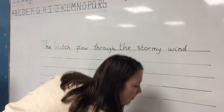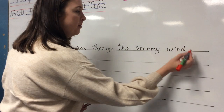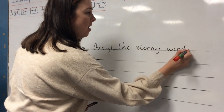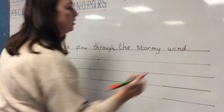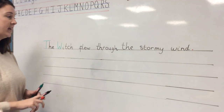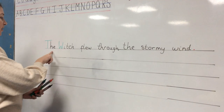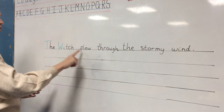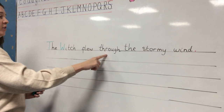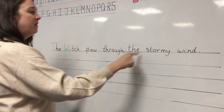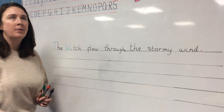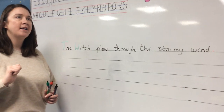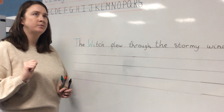I need to pop a full stop on — remember it sits on the line and it's only small. Now I need to check it: 'The witch flew through the stormy wind.' Now I'm going to think of my next sentence.